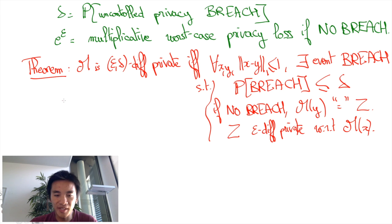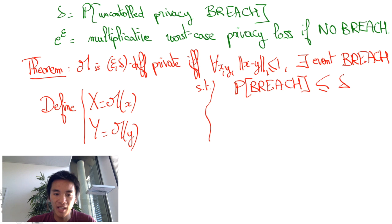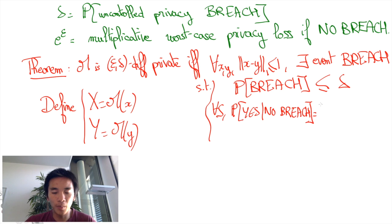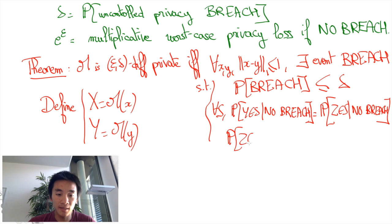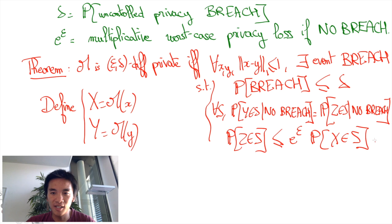So let's be a bit more precise now. We're going to simplify notations and write capital X equals m of x and capital Y equals m of y. The conditions of the right-hand side of the theorem boil down to: the probability of a breach is smaller than delta; the probability of Y in S given that there is no breach equals the probability of Z in S given that there is no breach, for any subset S of possible responses; and for any S, the probability that Z is in S is at most e to the epsilon times the probability that X is in S. We'll restrict ourselves here to the case of discrete responses.